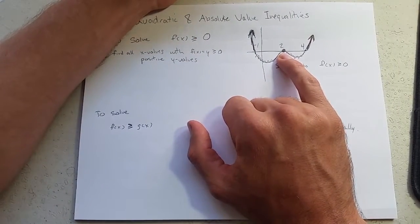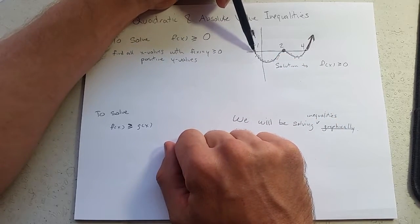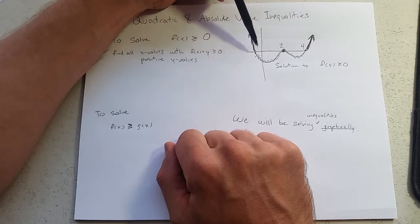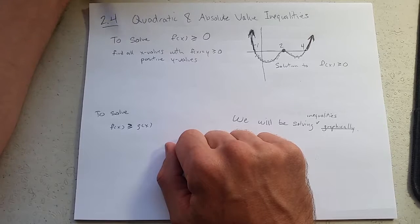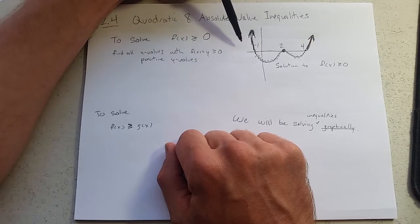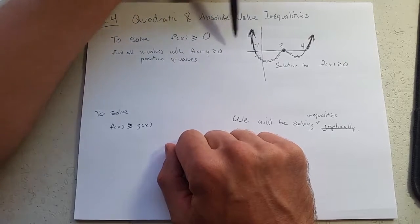So how do we identify these values? Well, we want to talk about the x values, not the y values. Even though we're looking at when are the y values greater than or equal to 0, our answer is going to be intervals and sometimes just single x values.